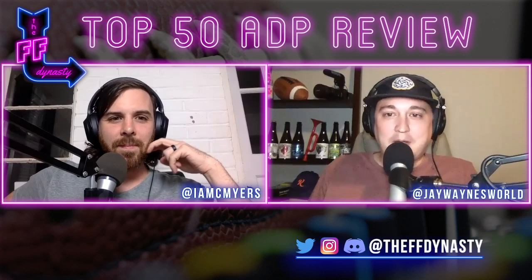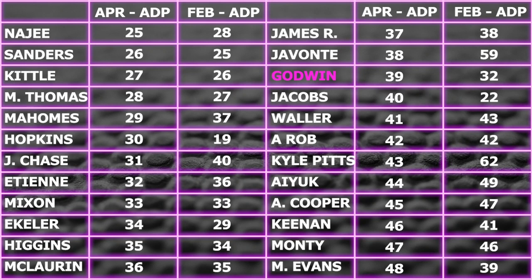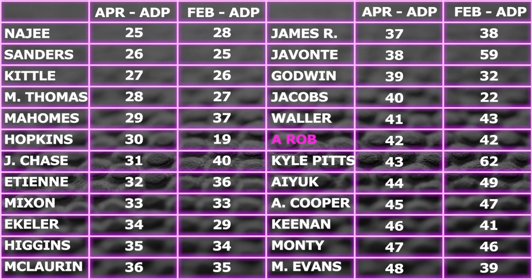Chris Godwin drops from 32 to 39. Kenyan Drake's free agent departure causes Josh Jacobs to slide from 22 down to 40. Darren Waller — if our guy Big Co were here, he'd say Waller isn't high enough. I'll say it for him: get him higher. He's fantastic, especially in a tight-end premium format. Alan Robinson stays put both ADP-wise and team-wise.